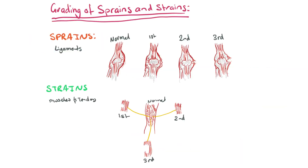When we look at sprains and strains, we need to grade them in order to identify what type of treatment is needed and how long the rehabilitation process needs to go. Looking at sprains — which are to the ligaments — using a knee joint as an example: a first grade sprain shows a little bit of stretch within the ligament. A second grade sprain shows more damage and possibly a partial tear. A third grade sprain is a completely torn ligament. For strains in the muscles and tendons, a first grade strain is similarly just a slight tear.